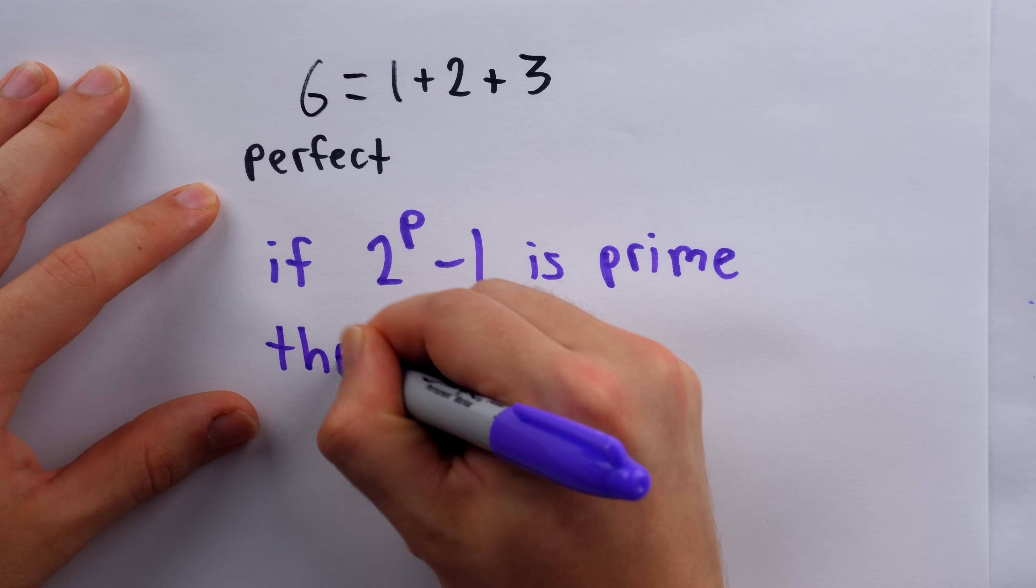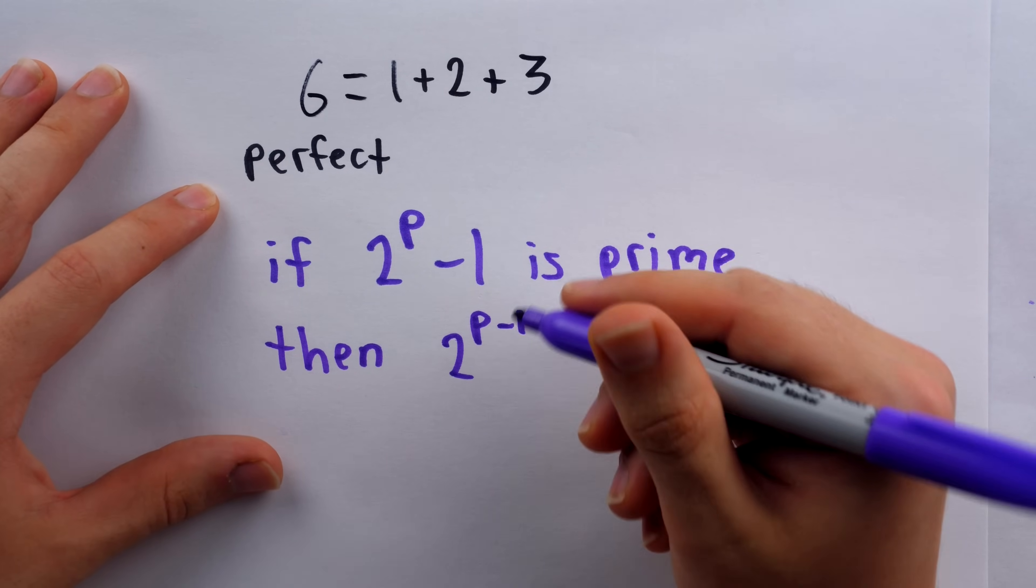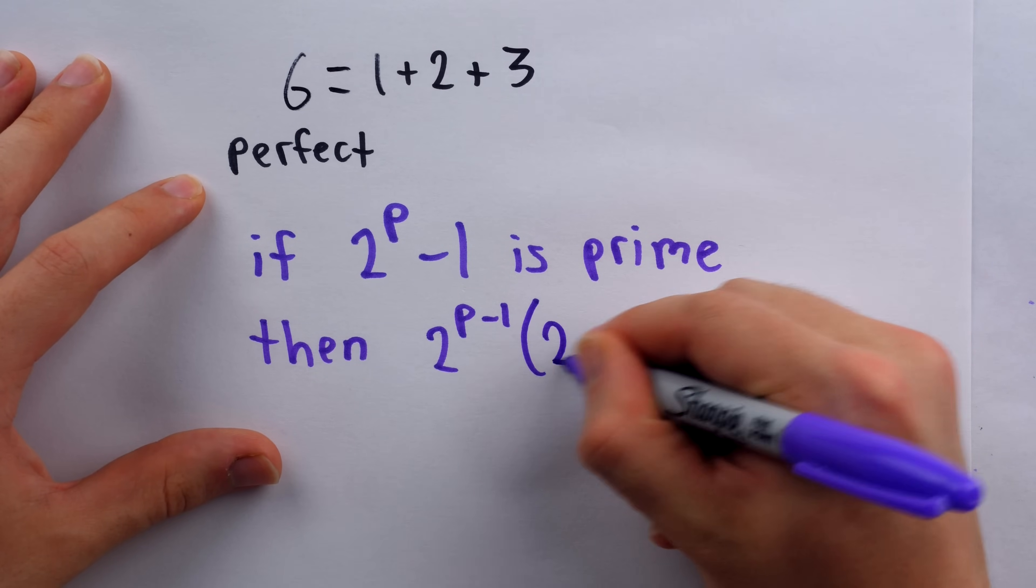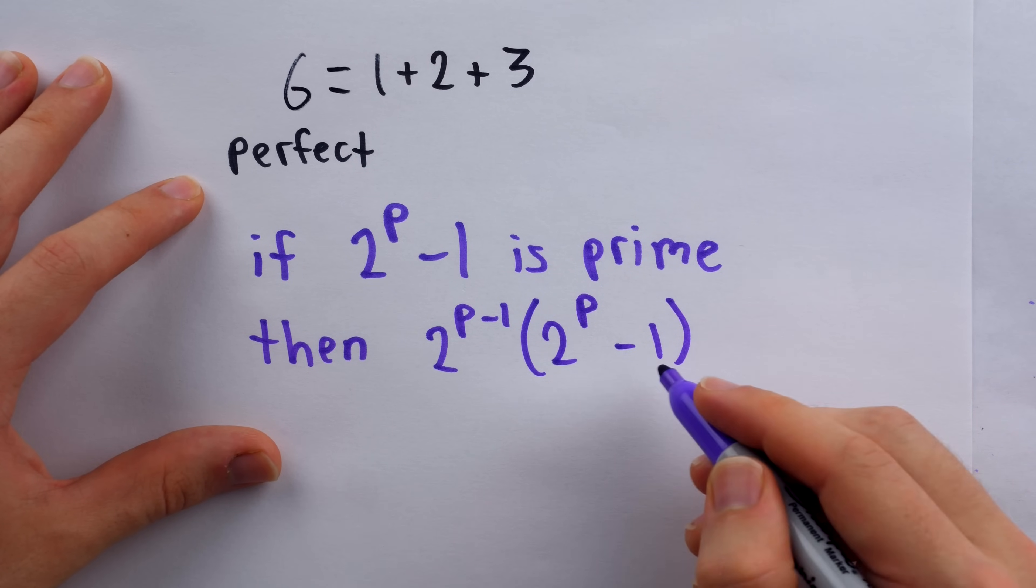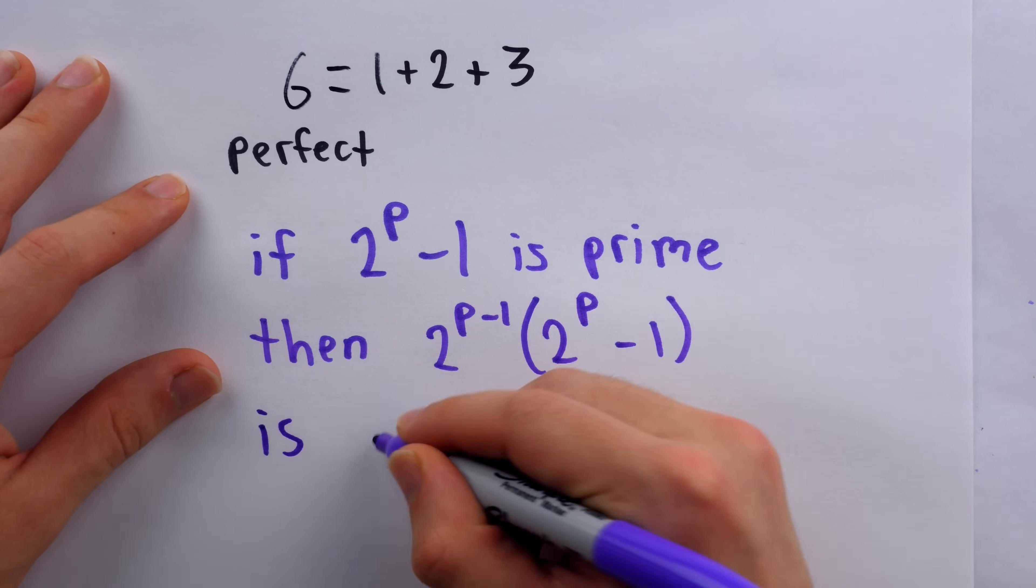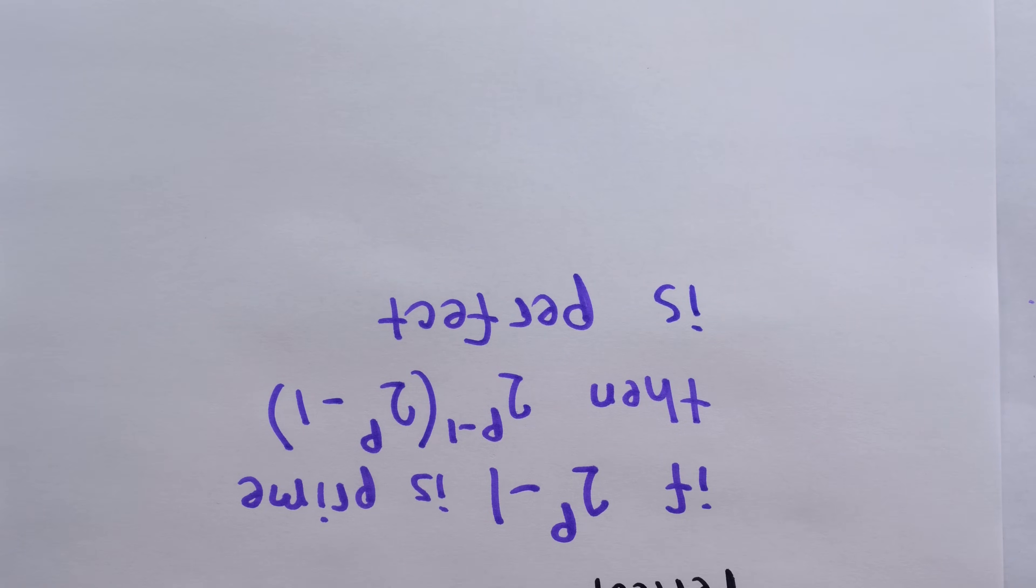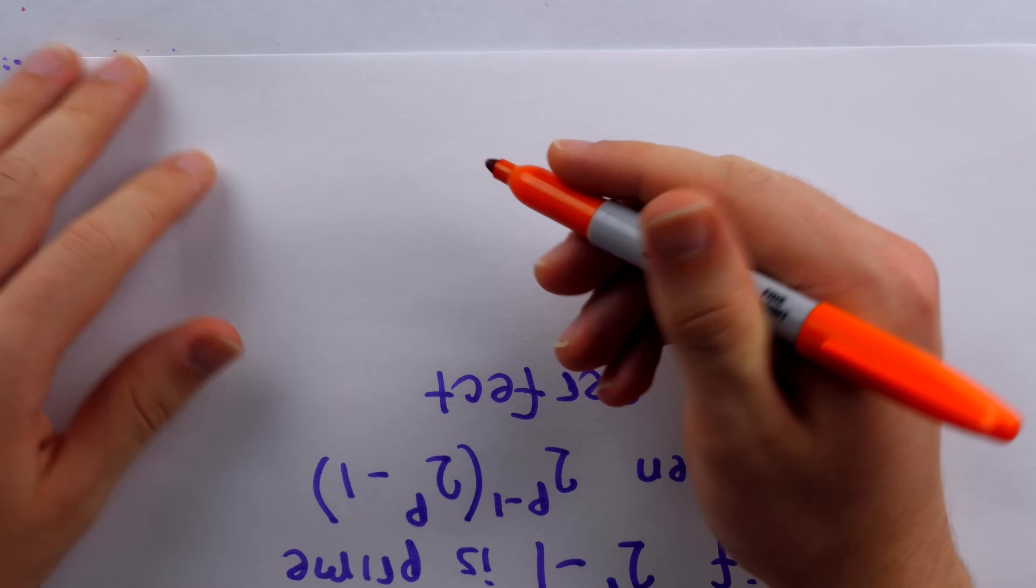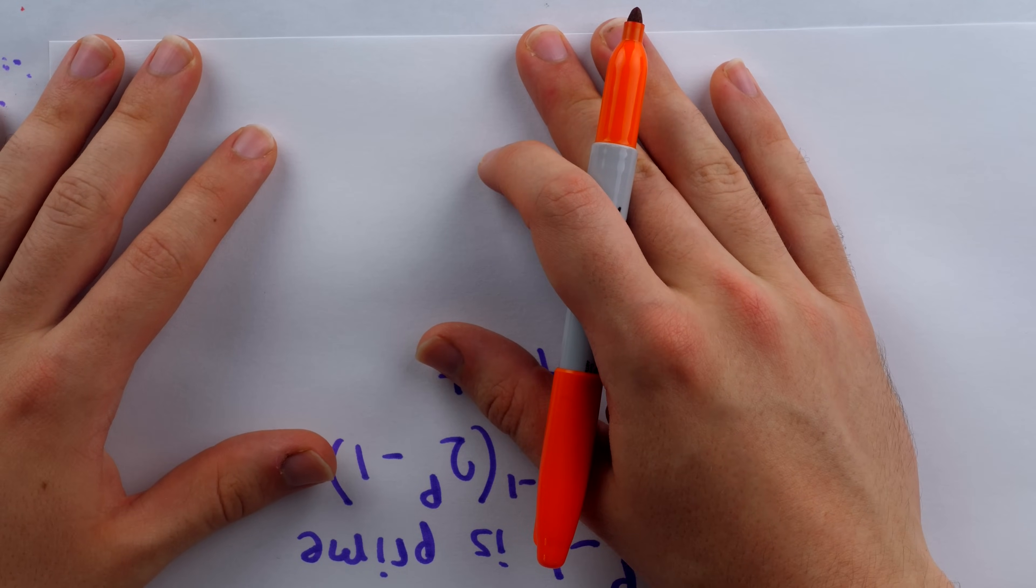what Euclid proved is that you actually get a perfect number out of this. What you have is the number two to the p minus one, so p minus one in the exponent, multiplied by two to the p minus one, the Mersenne prime in question, this product is going to be perfect. So with this new largest prime number, which is over 40 million digits long, we also now have a new largest perfect number, thanks to that theorem from Euclid.